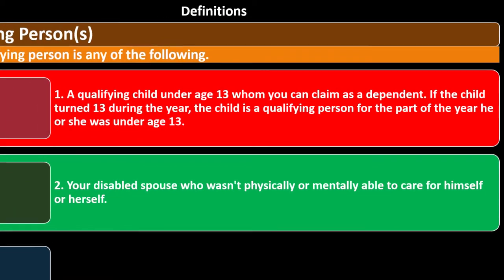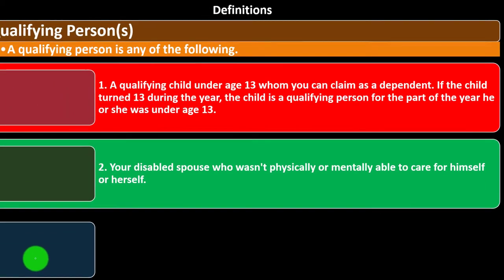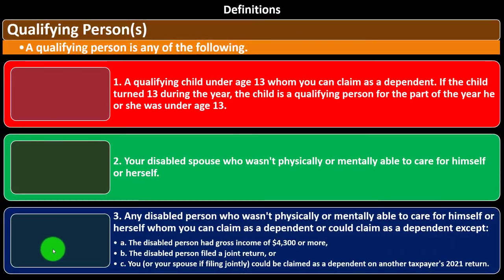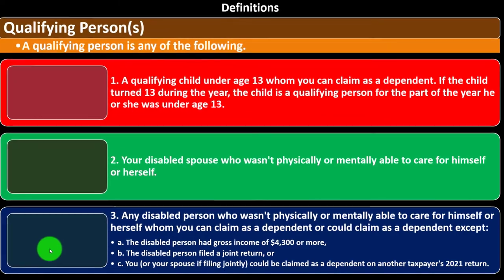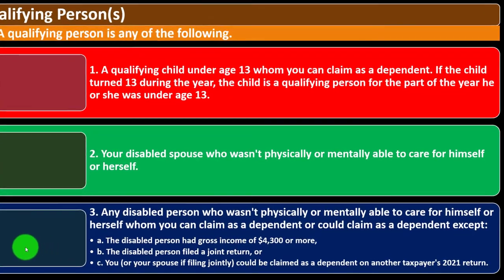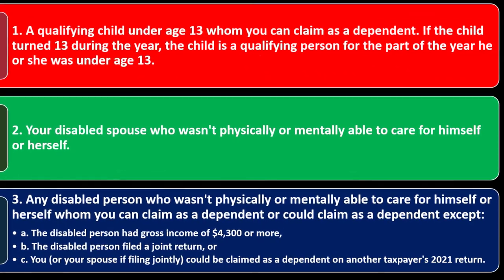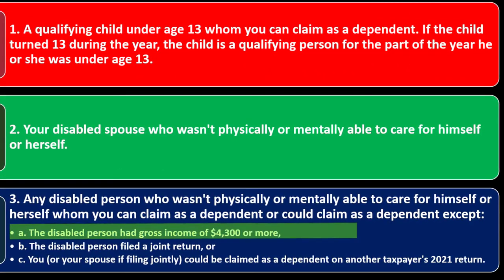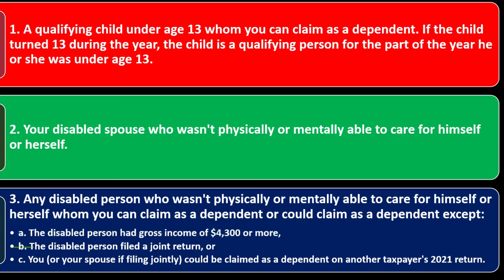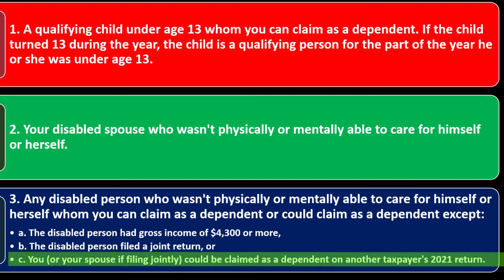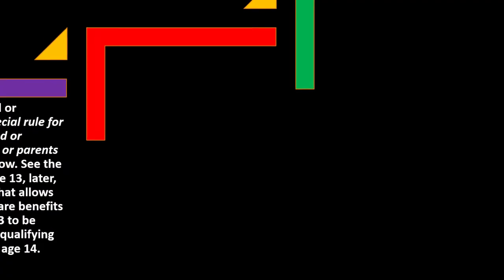Two: a disabled spouse who wasn't physically or mentally able to care for himself or herself. Three: any disabled person who wasn't physically or mentally able to care for themselves, whom you can claim as a dependent or could claim as a dependent, except if: (A) the disabled person has gross income of $4,300 or more; (B) the disabled person filed a joint return; or (C) you or your spouse, if filing jointly, could be claimed as a dependent on another taxpayer's 2021 return.